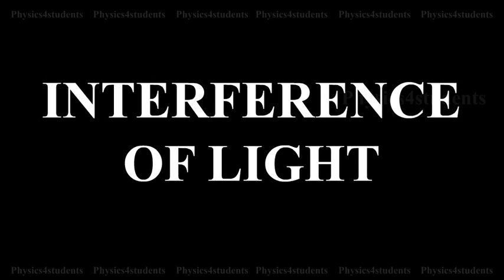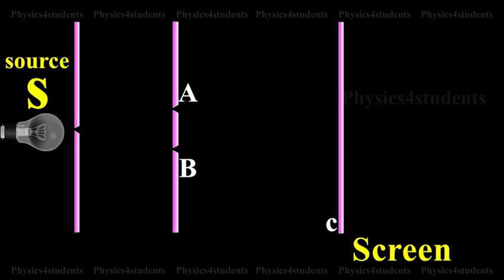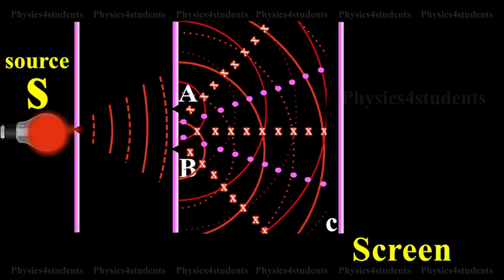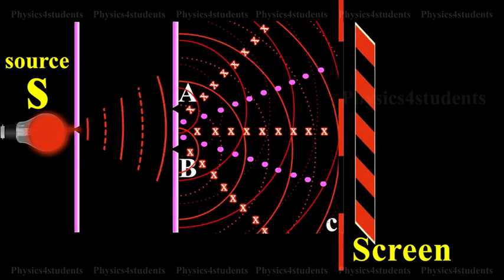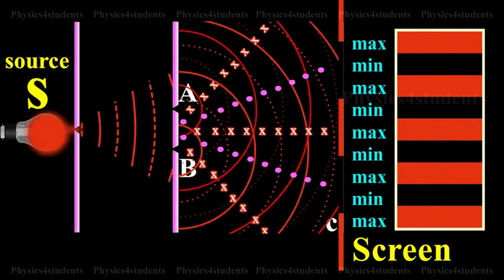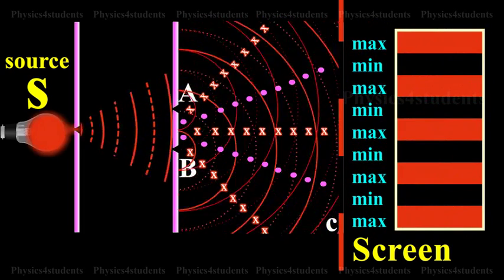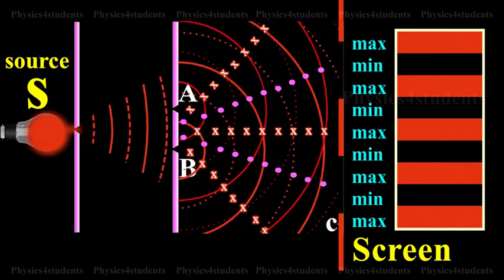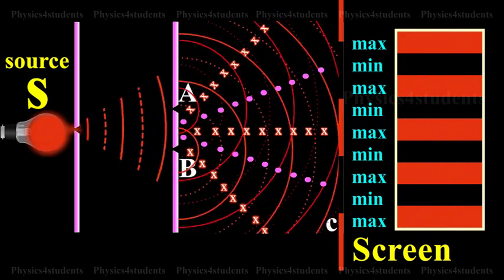Interference of Light. Two slits A and B illuminated by a single monochromatic source, S, acts as coherent sources. The waves from these two coherent sources travel in the same medium and superpose at various points as shown.